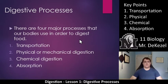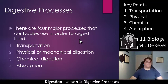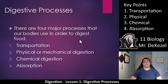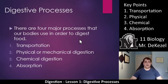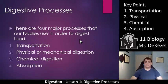Digestive processes — there are four major processes that our bodies use in order to digest food. The first is transportation; food needs to be moved through your body from your mouth to the back end. Physical or mechanical digestion — I generally just refer to it as physical digestion — is the actual breakdown of food, like chewing. Chemical digestion would be the acid in your stomach breaking stuff down. And then absorption: you need to absorb the nutrients into your bloodstream so that you can actually use them. So those are the four processes.